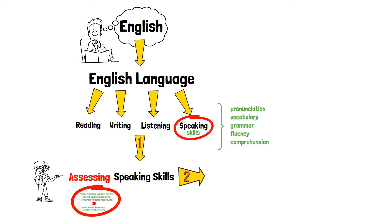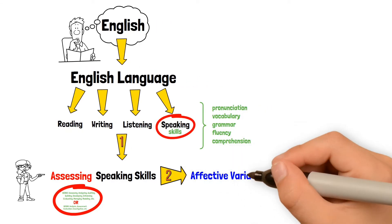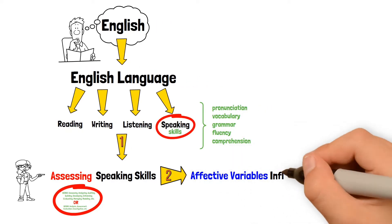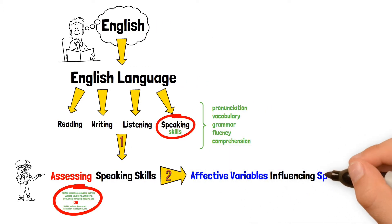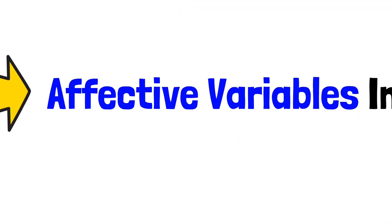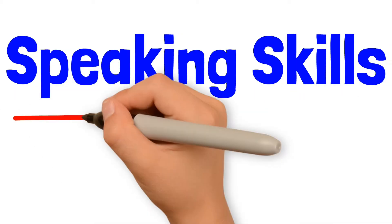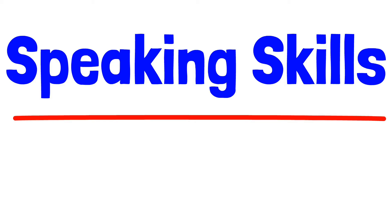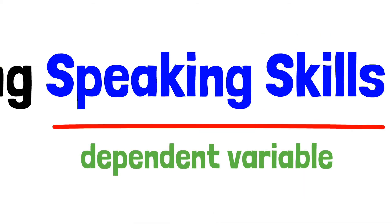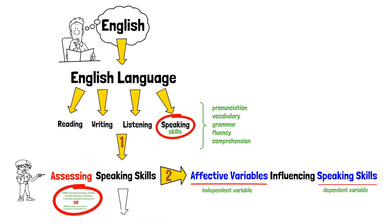2. Write the variables in the research. You can write one or both independent and dependent variables in the title. The independent variable is the cause, while the dependent variable is the effect. The independent variable is the one that the researcher changes in a research experiment. In contrast, the dependent variable is what changes as a result of the independent variable.